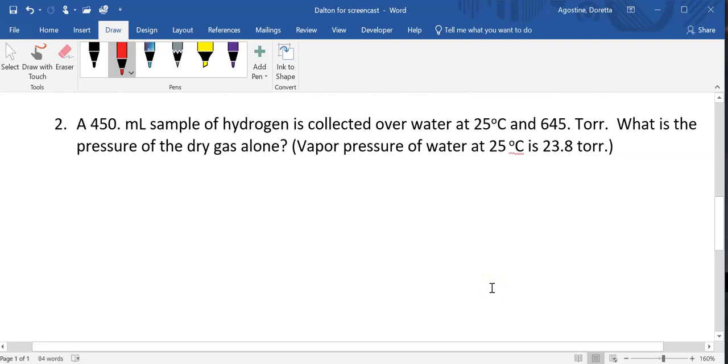we have a 450 milliliter sample of hydrogen collected over water. So the key phrase here is over water at 25 degrees C. So this number right here, 645 torr, is the total of the pressure of our hydrogen plus our pressure of our water, because it was collected over water.